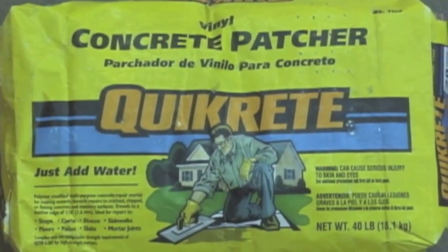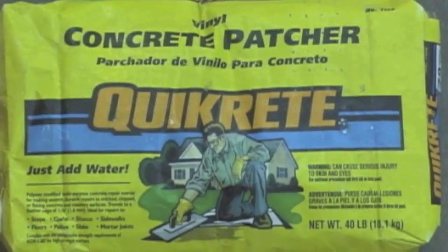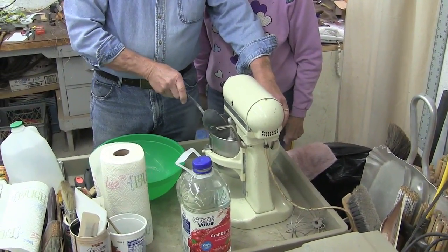Mix your quick-crete vinyl patch or cement in a mixer to pancake batter consistency and pour and vibrate.